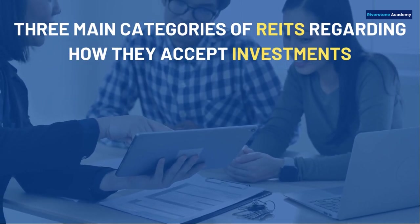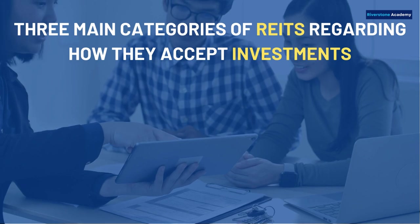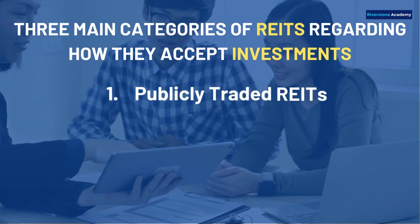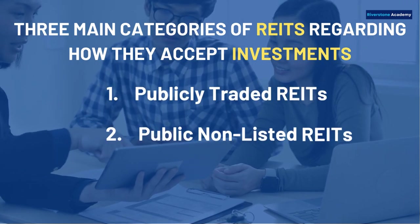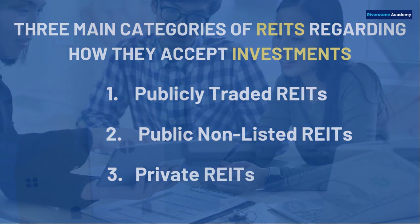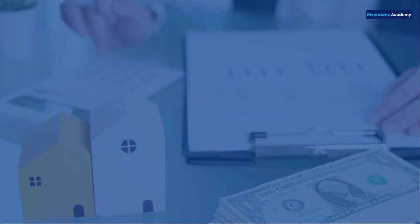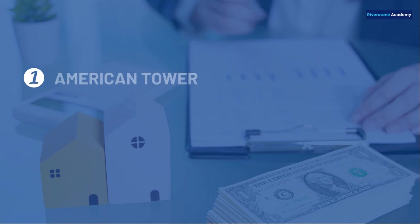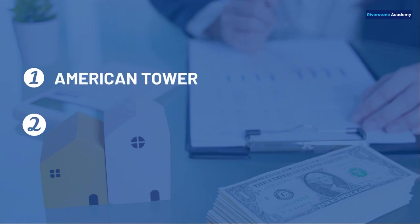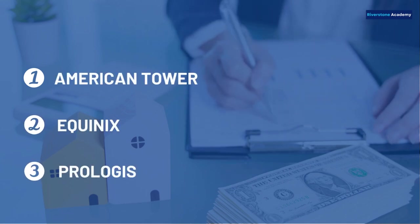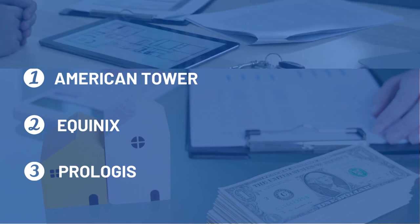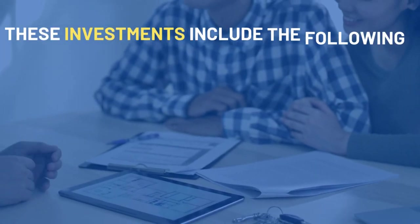As an investor, it is important to understand that there are three main categories of REITs regarding how they accept investments: publicly traded REITs, public non-listed REITs, and private REITs. Some noteworthy companies listed as REITs include American Tower, Equinix, and Prologis.